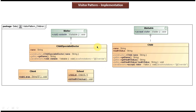This is the class diagram of the scenario we just discussed. At the top you can see the visitable interface, which has an accept method that accepts a visitor object — this accept method is abstract. Child is a concrete class that implements the visitable interface and provides an implementation of the accept method. Child has two attributes: name and health status, with getter and setter methods. To create a child you use the constructor and pass the name of the child.